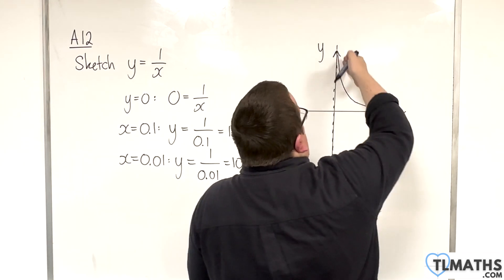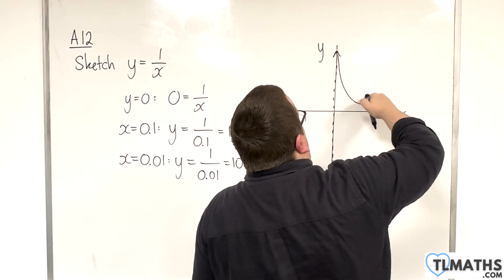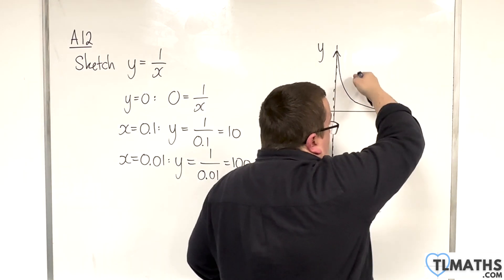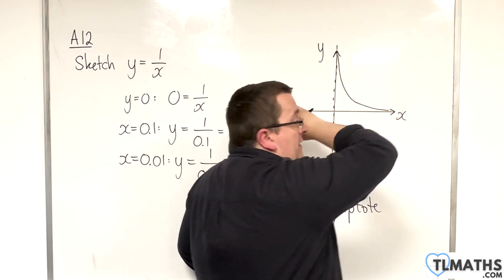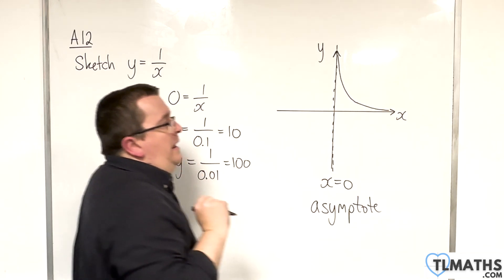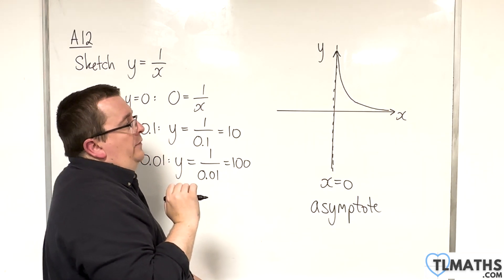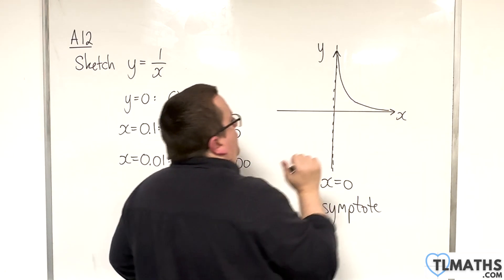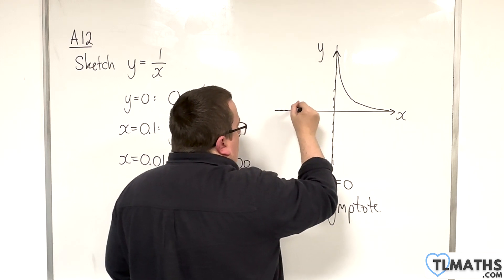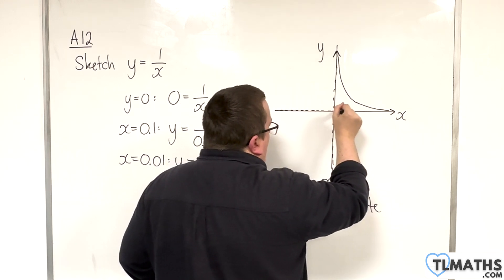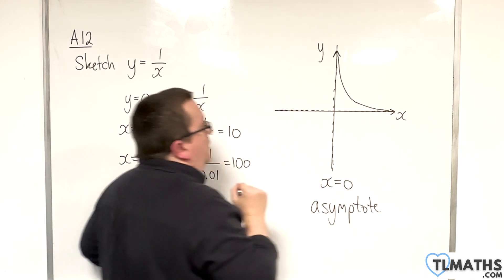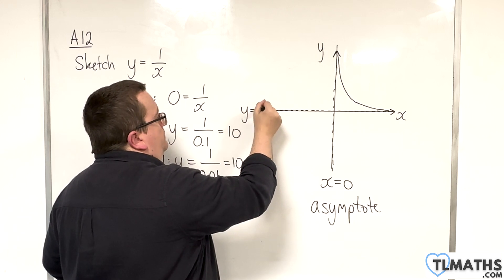The curve is also getting closer and closer to the x-axis as we increase the x values. So there is a horizontal asymptote at y equals 0.